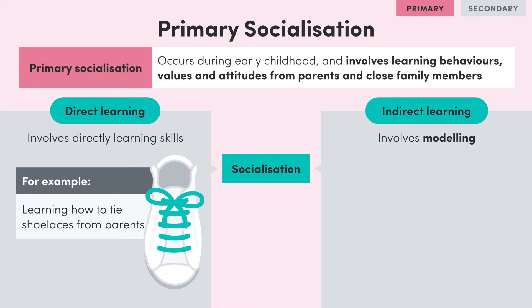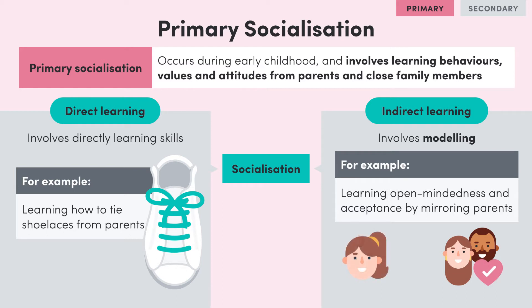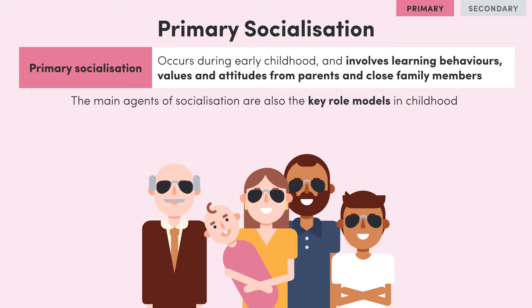To quickly refresh, modelling involves basing your behaviour off a close role model. So for example, you might grow up with parents who are really open-minded and accepting of different people and cultures. From observing this throughout your childhood, you might then model your attitudes and values based on your parents' attitudes, expressing a similar sense of open-mindedness when you interact with other people. When it comes to primary socialisation, the main agents of socialisation would be your key role models in childhood — so your parents, siblings, and other people who are close to you.